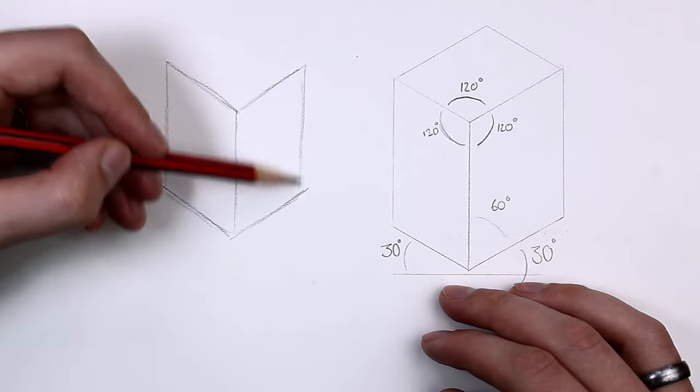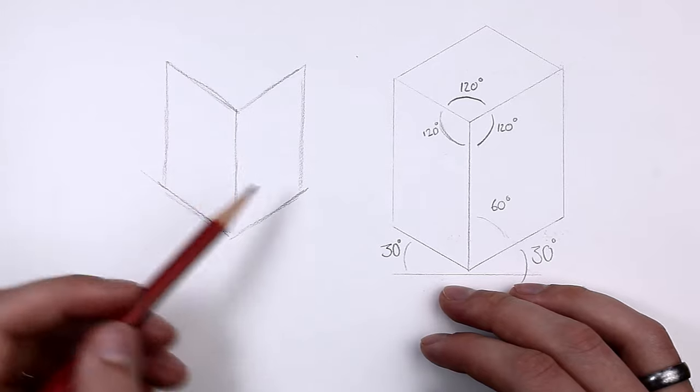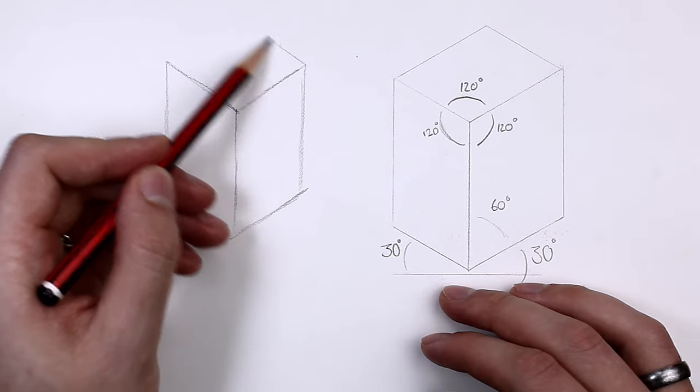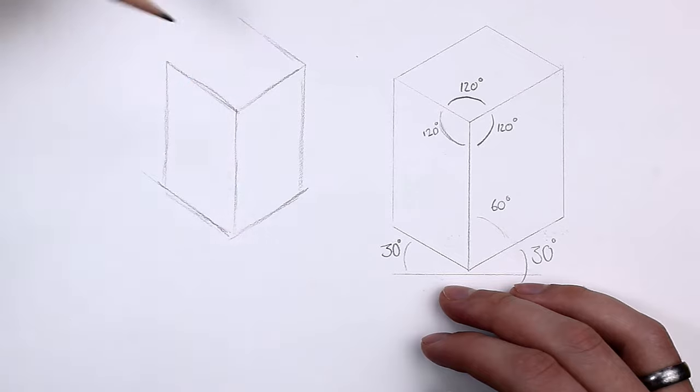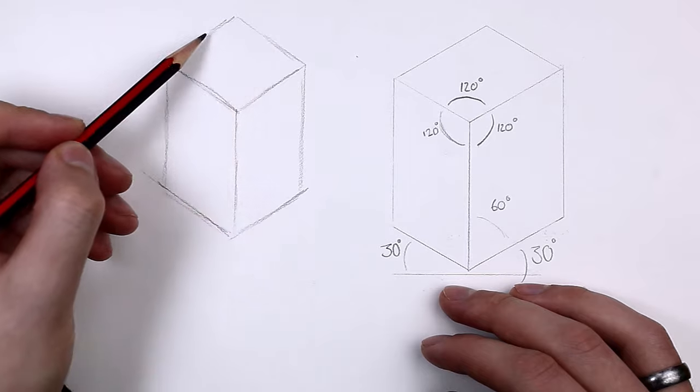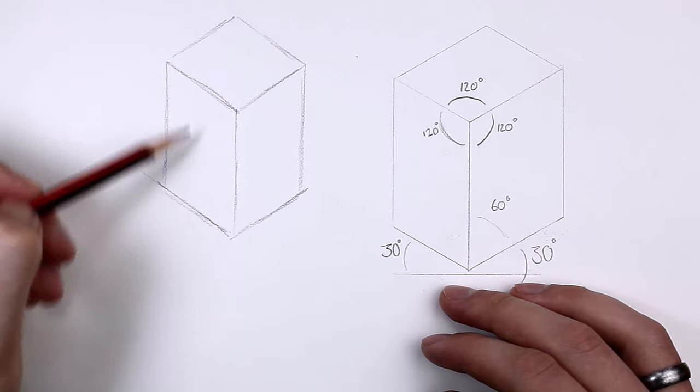So I'm then adding two matching vertical lines. And I'll finish up with some matching diagonal lines. Again, notice how these are parallel all the way through the drawing.